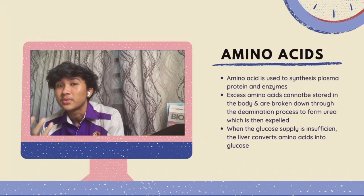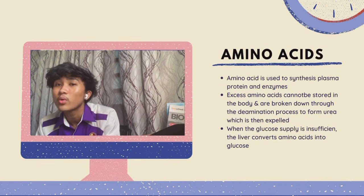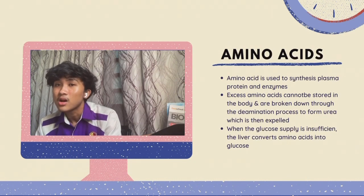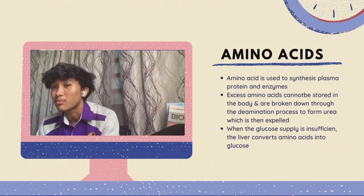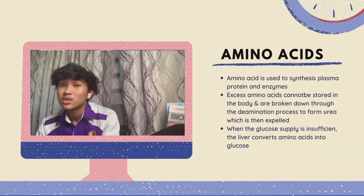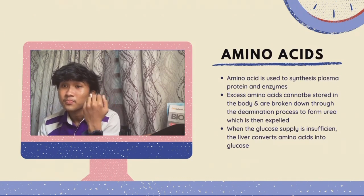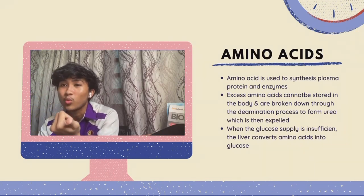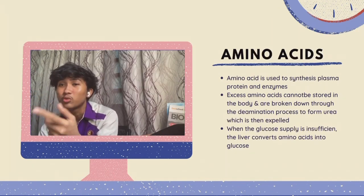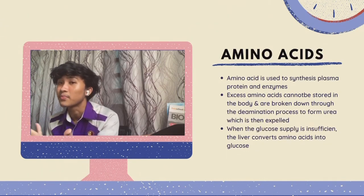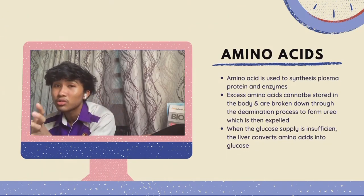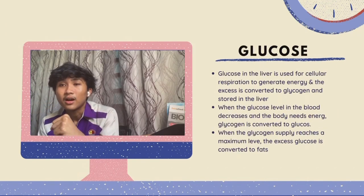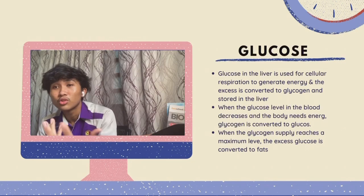Now we look at the assimilation process that occurs in the liver. For amino acids: they are used to synthesize plasma proteins and enzymes. Excess amino acids cannot be stored in the body, so they are broken down through deamination, forming urea which is later expelled through the urine. When glucose supply is insufficient, the liver is able to convert amino acids into glucose.